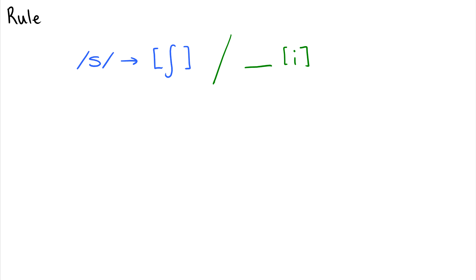And the reason we don't need to write this one with features is because these are very specific sounds. We're not necessarily targeting a natural class of sounds. It's not s and some other sound changing features together. It's this one specific sound changing into this other specific sound before this very specific vowel.